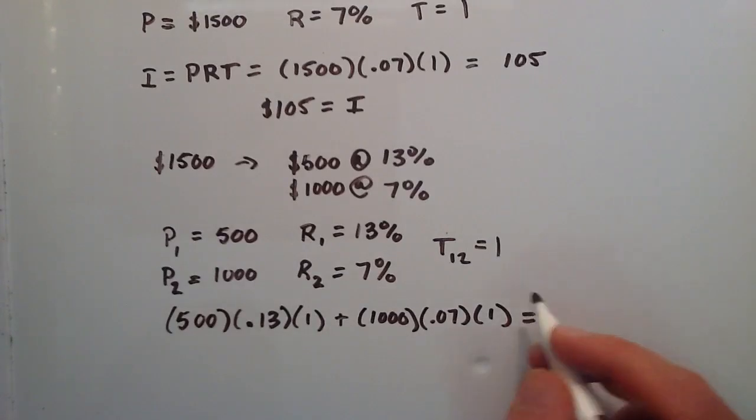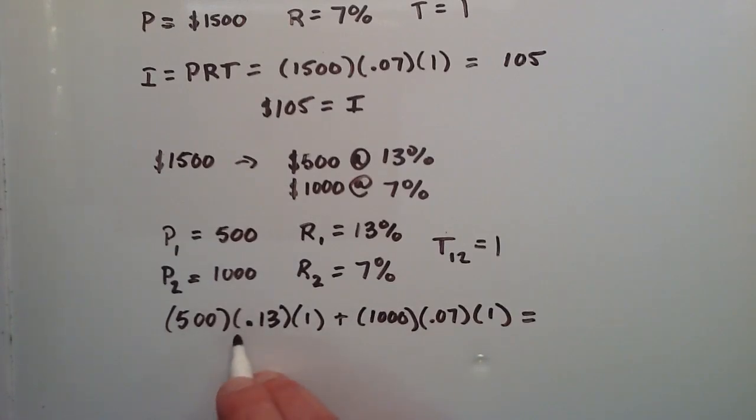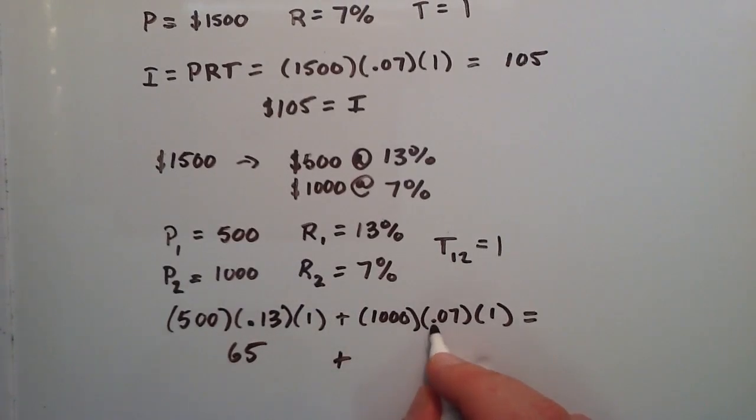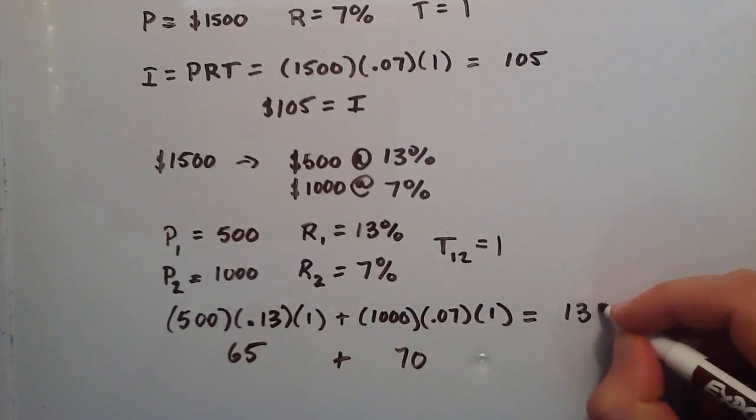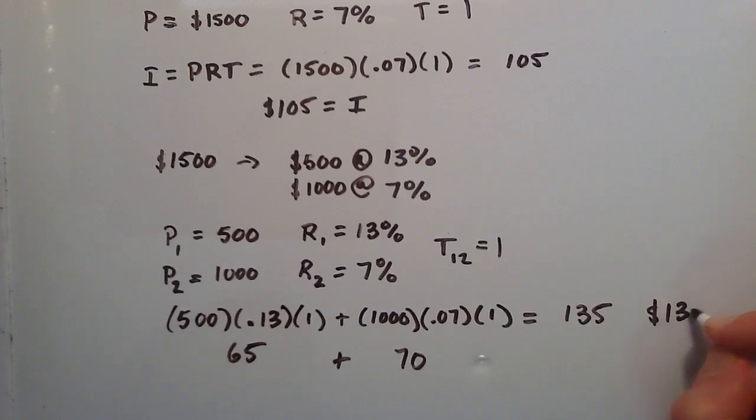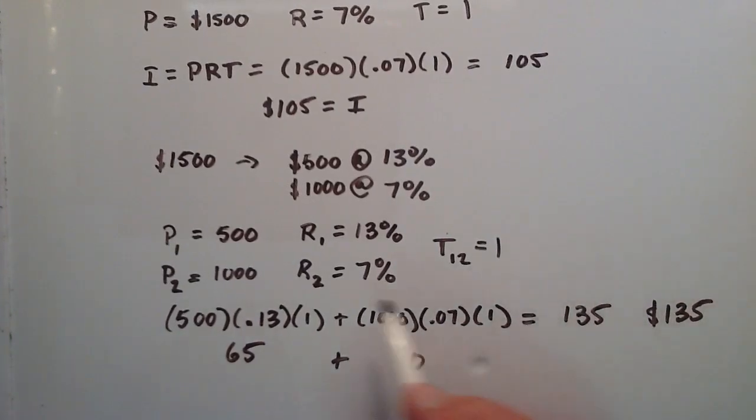We're finding out what the total of the whole $1,500 is, so we just add them together. So 500 times 0.13 times 1 is going to give us 65. And 1,000 times 0.07 is going to give us 70. 65 plus 70 is $135.